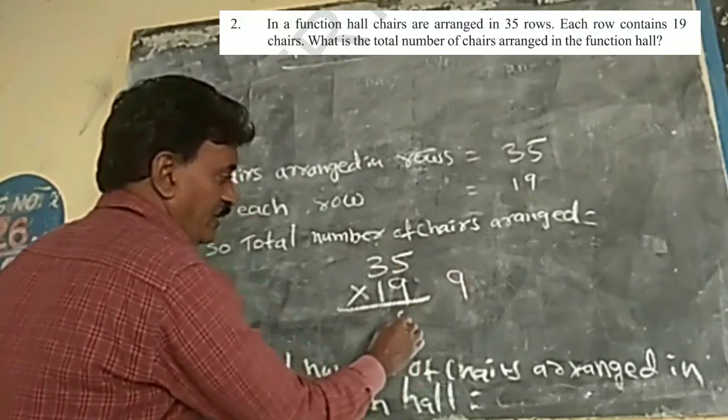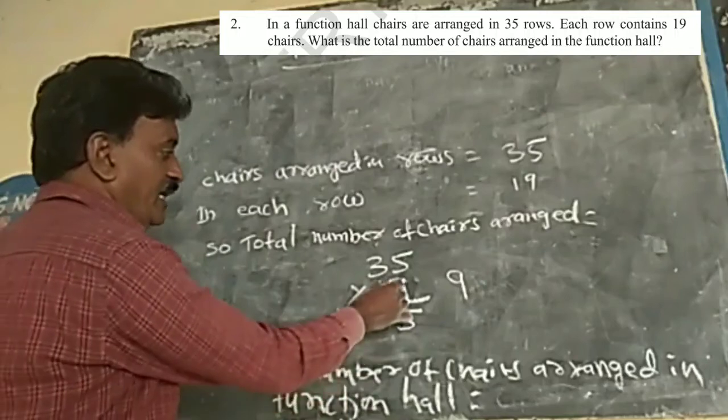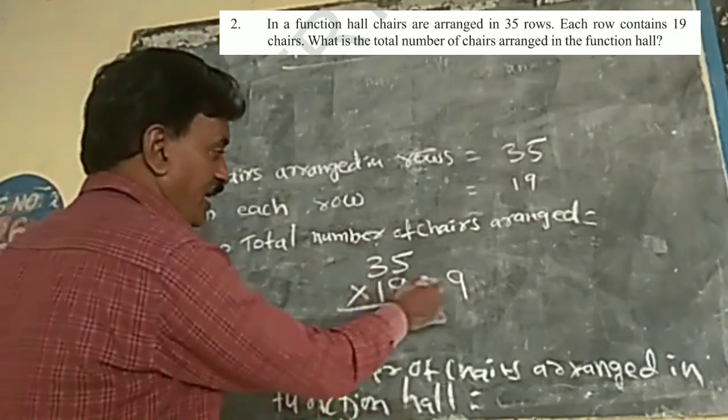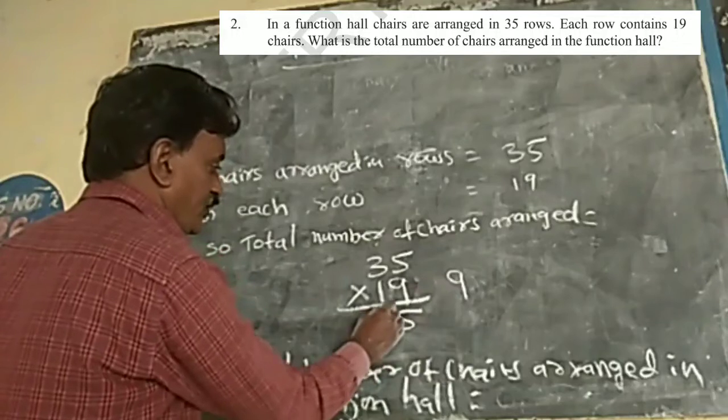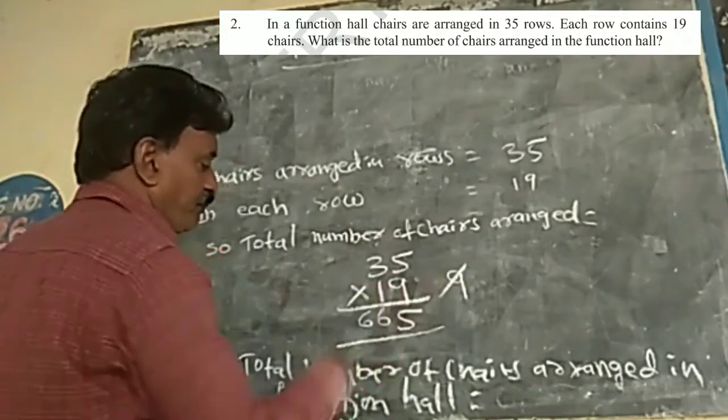Here, 9. Here, 5. 19, 3, 57. 57. 57 plus 9, 66.